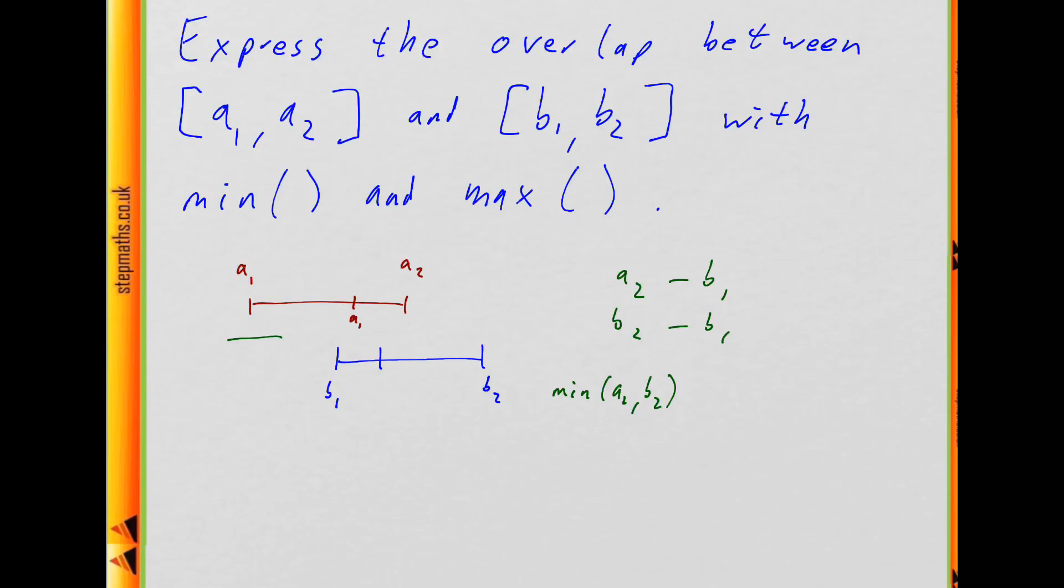What would the overlap be? It would just be a2 minus a1. So we can see what we're using isn't always b1. It's going to be whichever of a1 and b1 is further to the right. So that means what we're using is the maximum of a1 and b1, and that's what we're taking away.